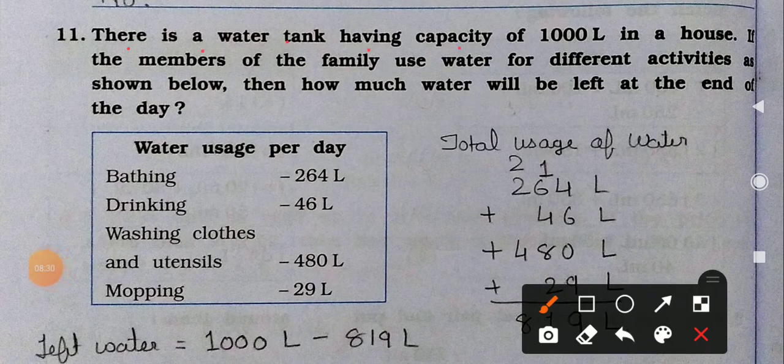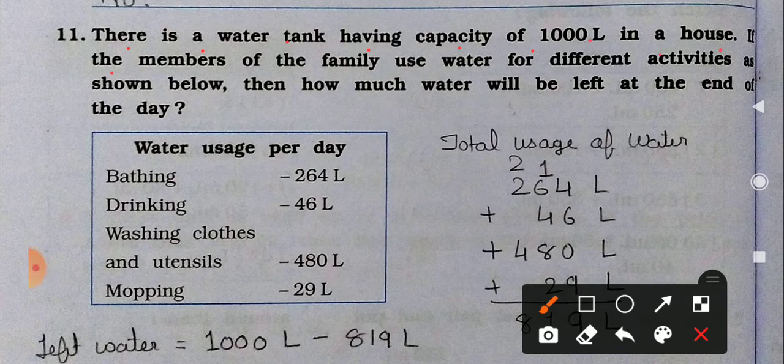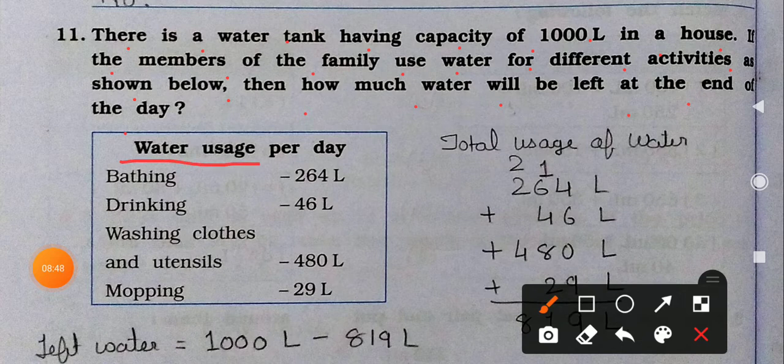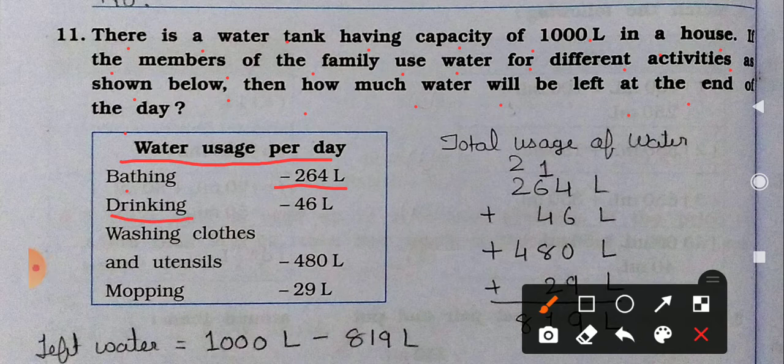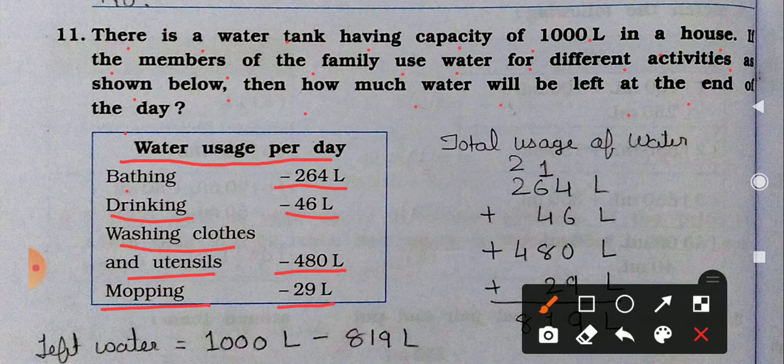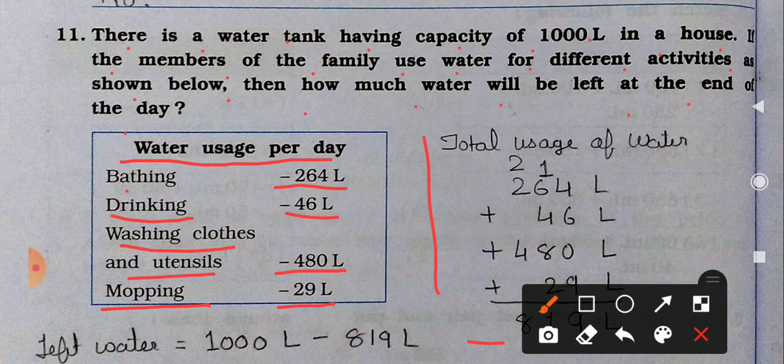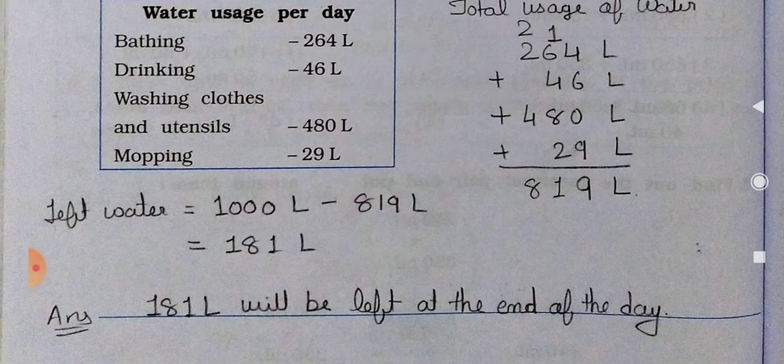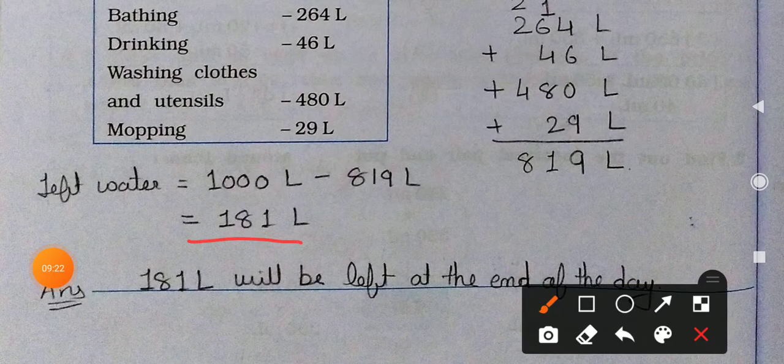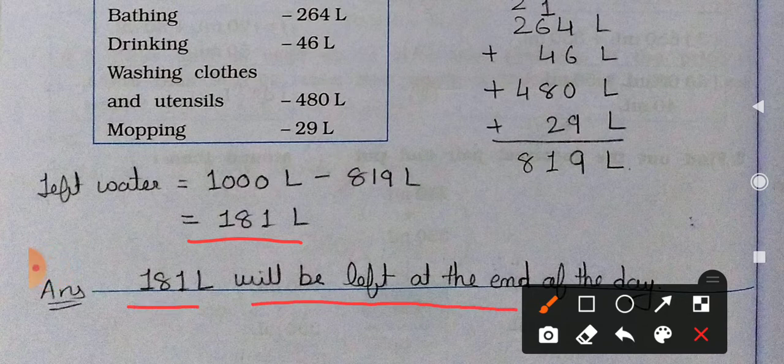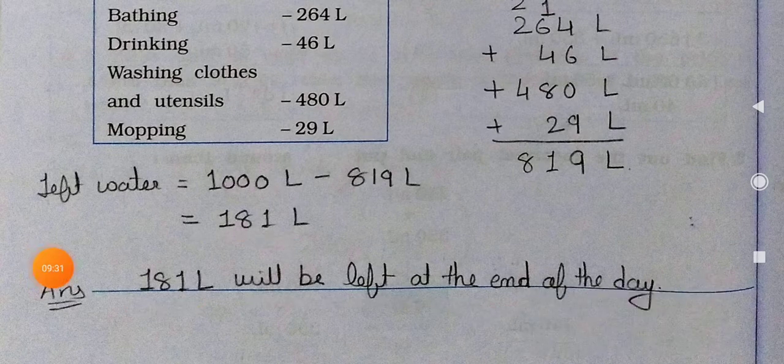Now see question number 11. There is a water tank having capacity for 1000 liter in a house. If the members of the family use water for different activities as shown below, then how much water will be left at the end of the day? Water use per day: Bathing 264 liter, Drinking 46 liter, Washing cloth and utensils 480 liter, Mopping 29 liter. So total you have to add like this. It will come 819 liter. So left water: 1000 liter subtract with 819 liter. After subtract it will come 181 liter. So 181 liter will be left at the end of the day.